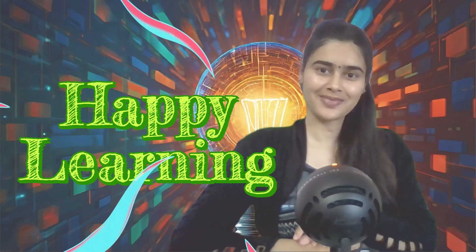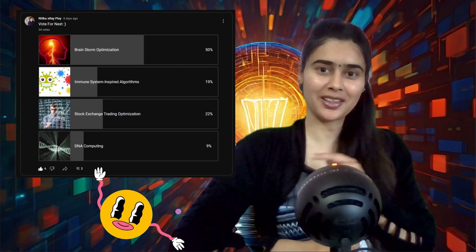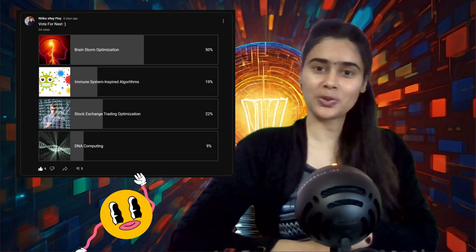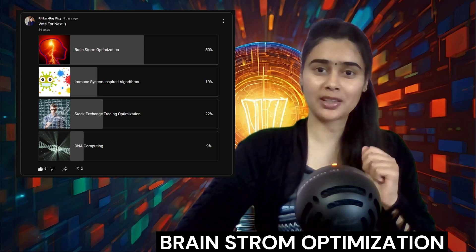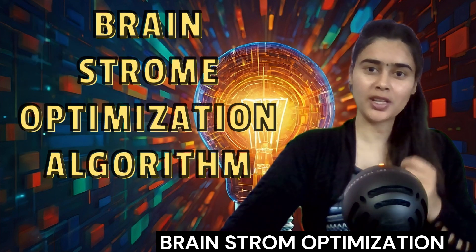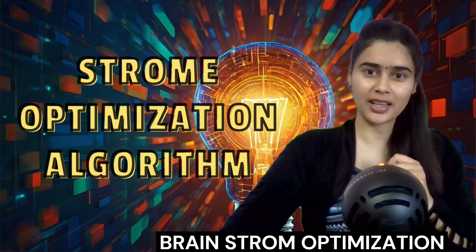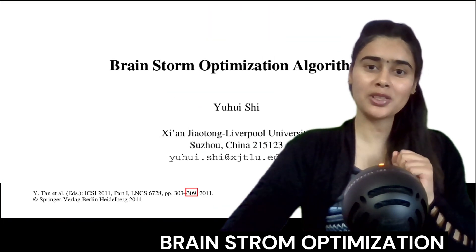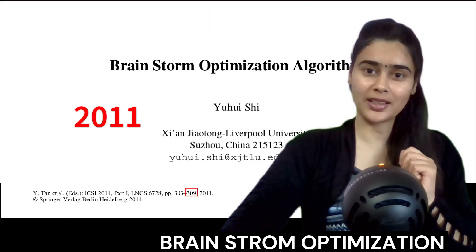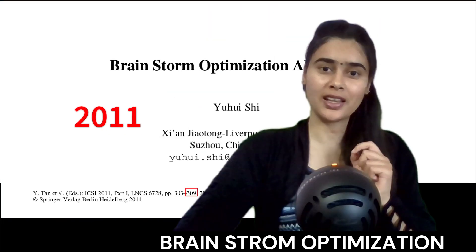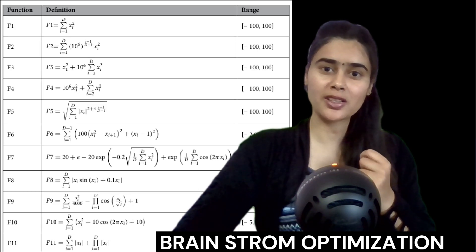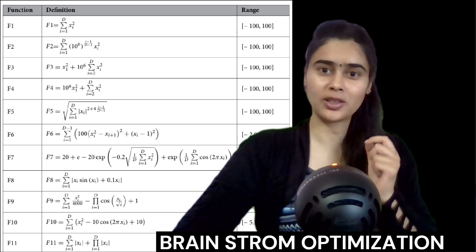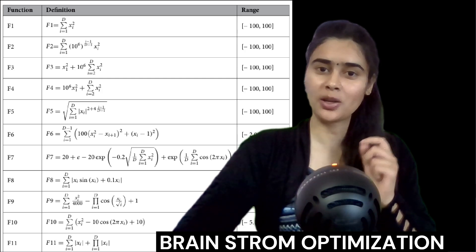Hello everyone, happy learning and thanks for participating in this activity. Today in this video we will cover this new swarm intelligence based algorithm named as Brainstorm Optimization Algorithm. This algorithm was introduced in 2011 and has been tested on different benchmark test functions to check algorithm effectiveness and performance.